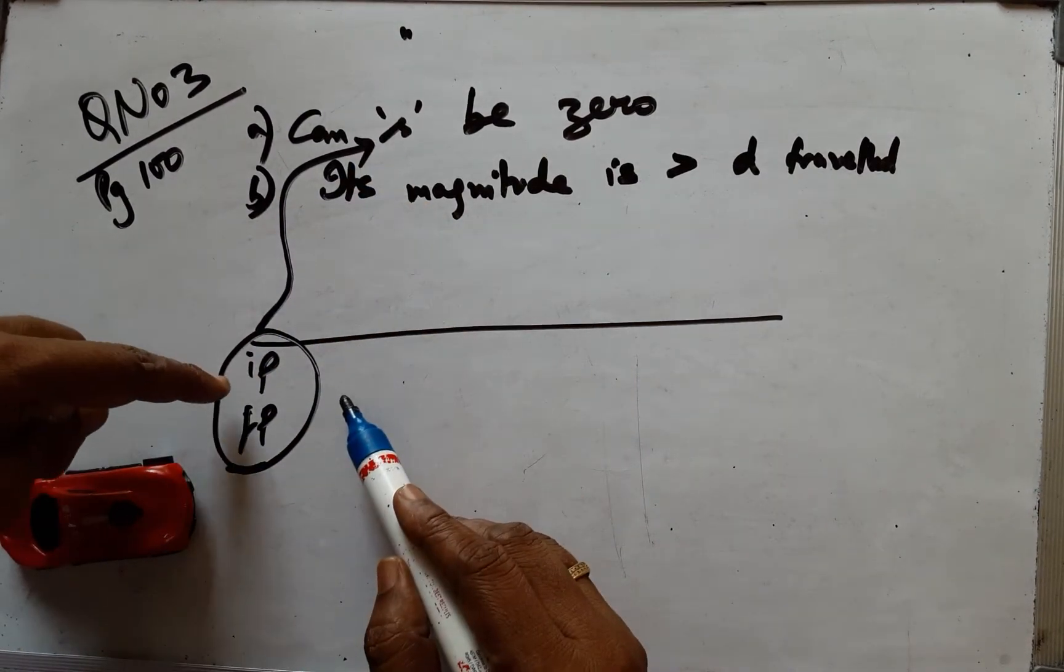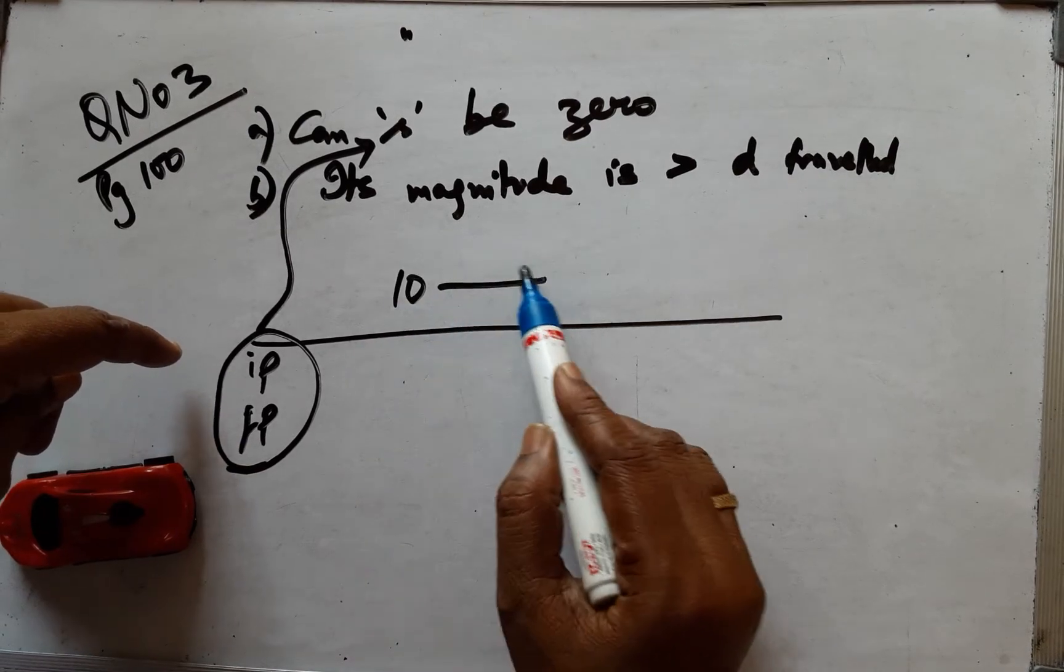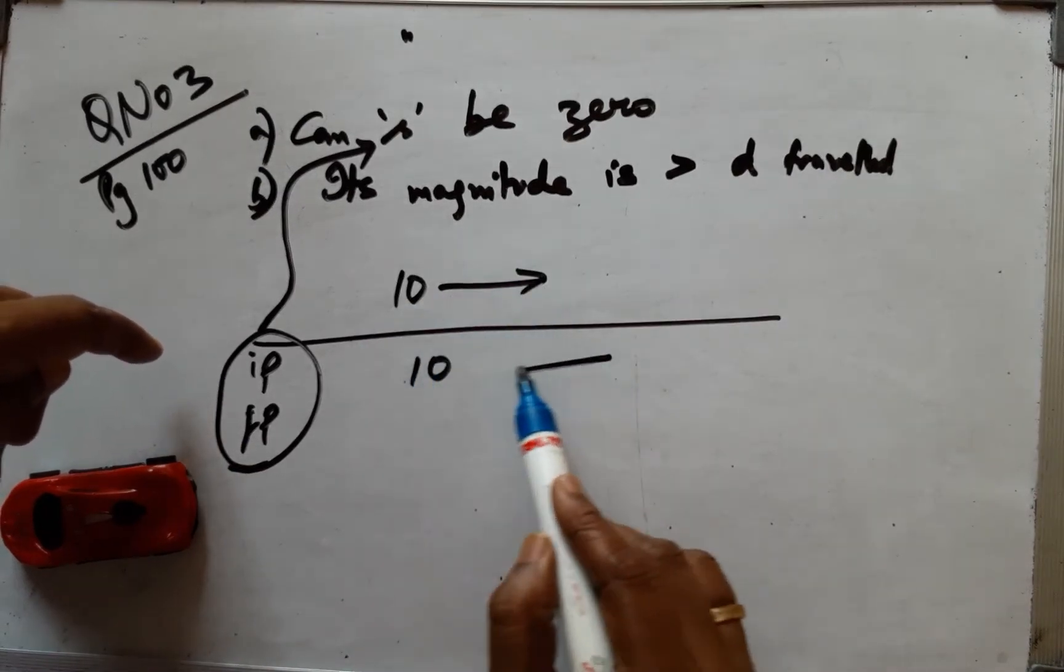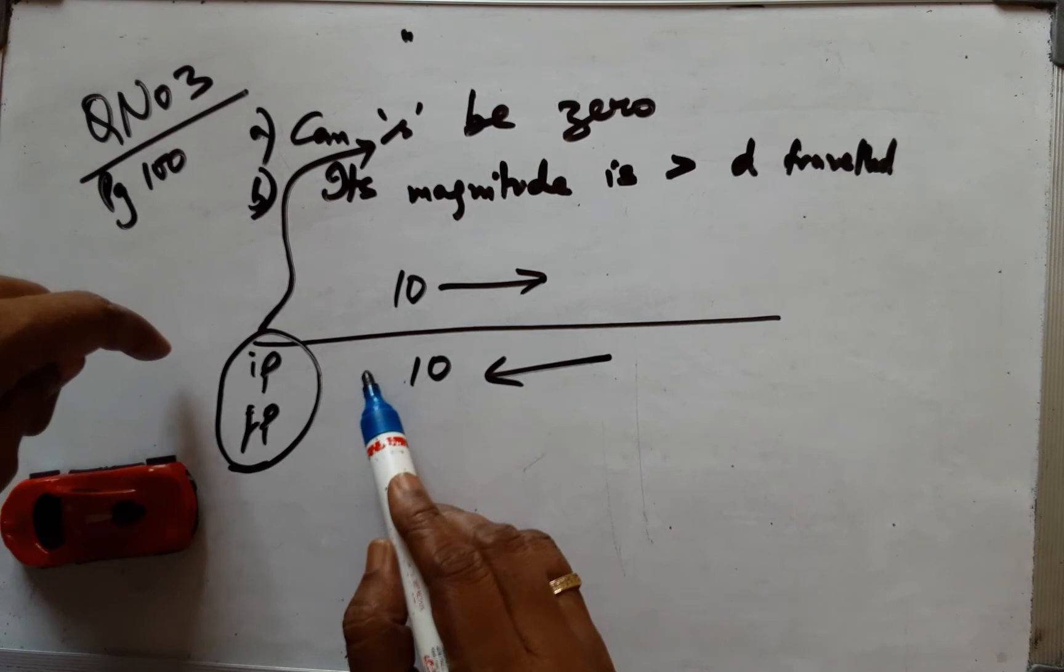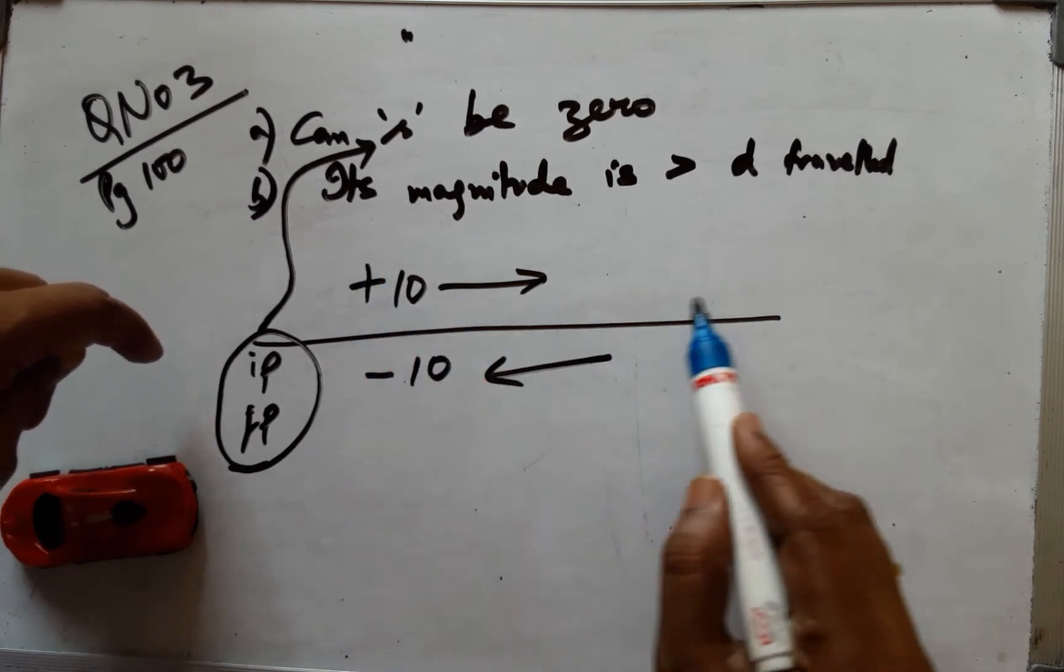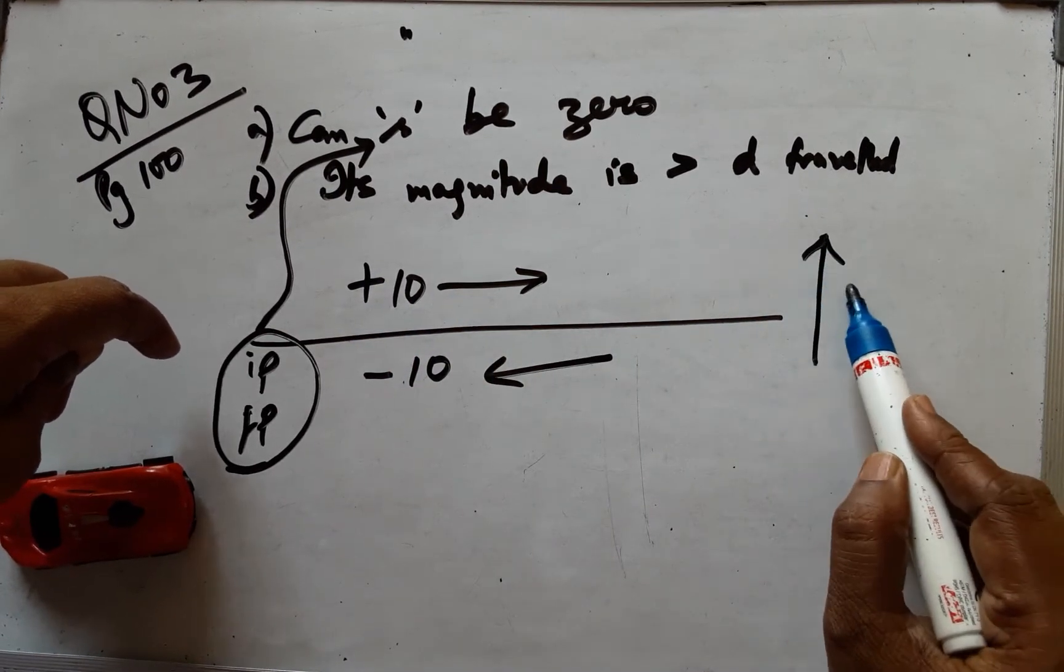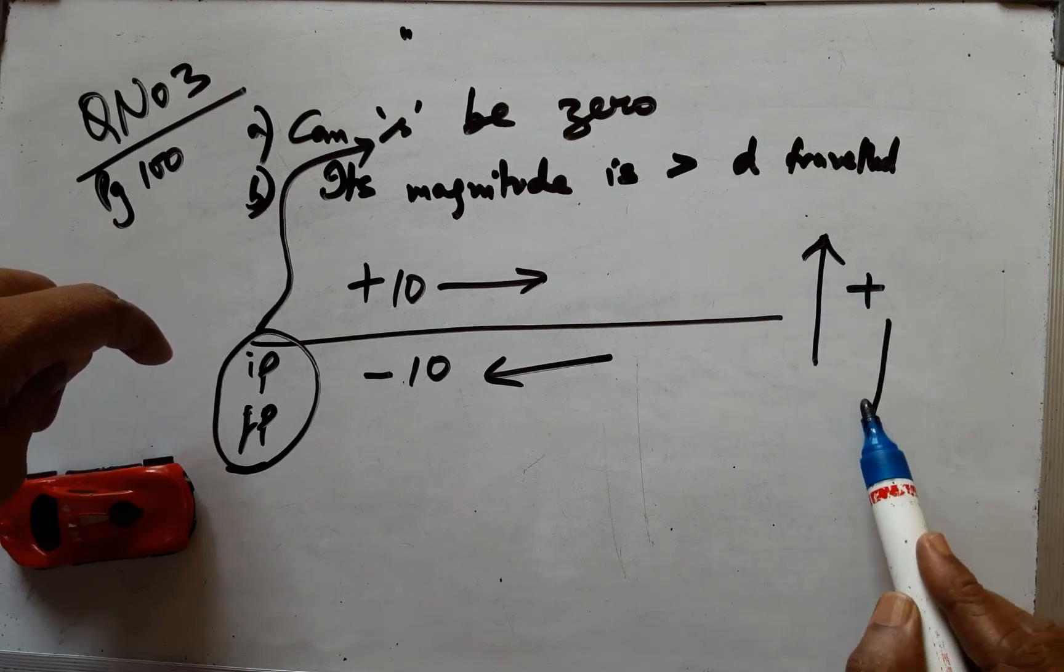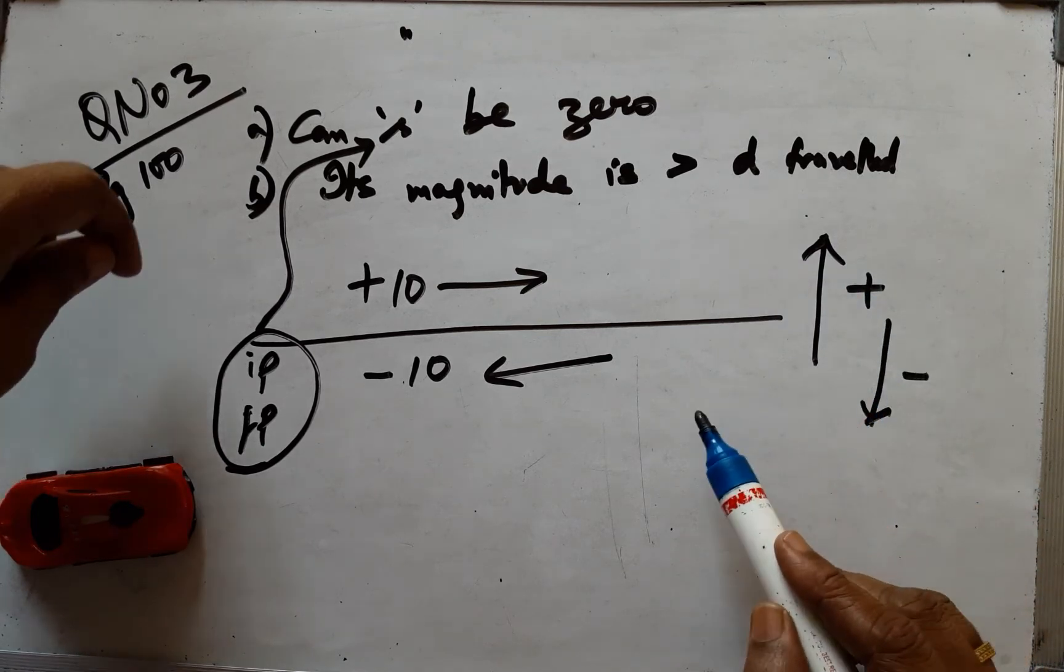Then displacement is always zero because going forward and backward, backward direction is always minus, forward direction is always plus, upward direction is always plus, and downward direction is always minus for displacement.